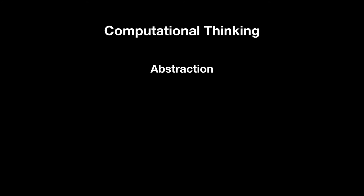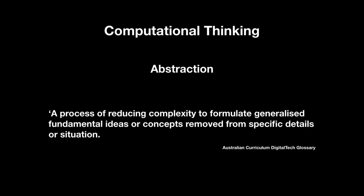Abstraction helps us manage the complexity of computer systems and the problem we're trying to solve. It also helps us in planning and writing clean code, which is easier to maintain. With abstraction, we can reduce complexity, formulate generalised fundamental ideas or concepts, and remove specific details or situations to make it easier to solve a problem.